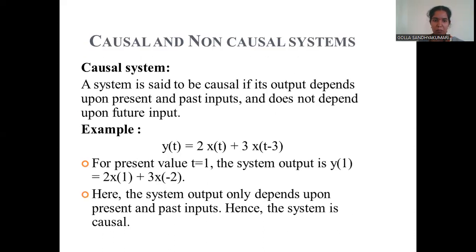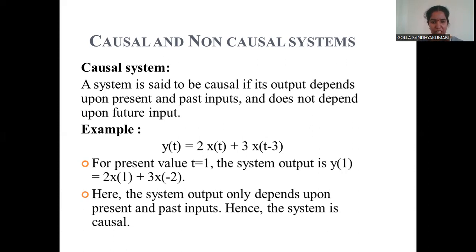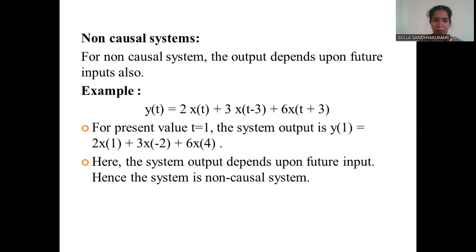A causal system depends on present and past inputs and does not depend on future inputs. For example, Y(t) = 2·X(t) + 3·X(t − 3). For the present value t = 1, we get Y(1), X(1), and X(−2). Since X(−2) is a past value of t = 1, the system is classified as causal.